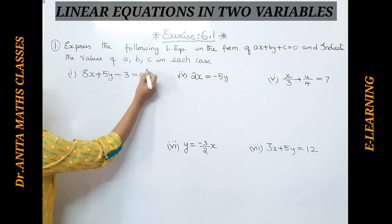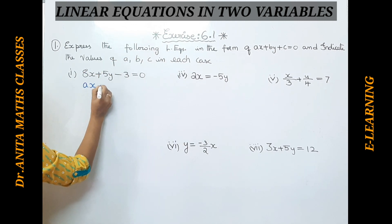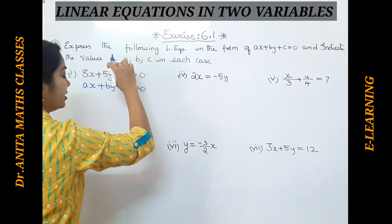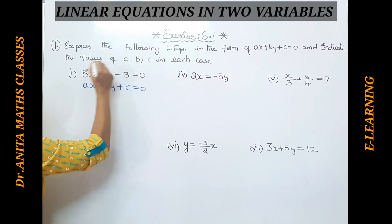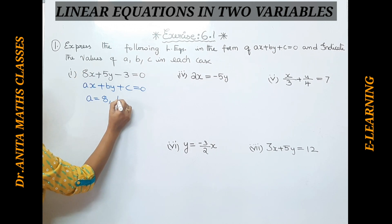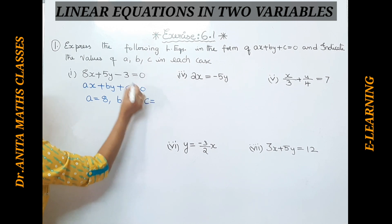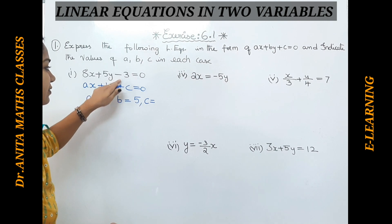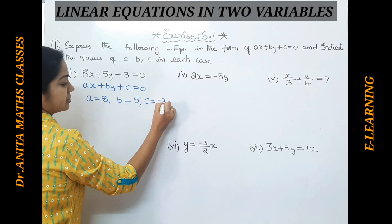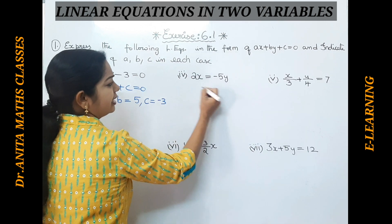For the first problem, we have to write the linear equation in the form ax + by + c = 0. This equation is already in that form. The value of a is the coefficient of x, which is 8. The value of b is the coefficient of y, which is +5. The value of c is the constant, which is −3 — we write the negative sign as well because the formula has +c.